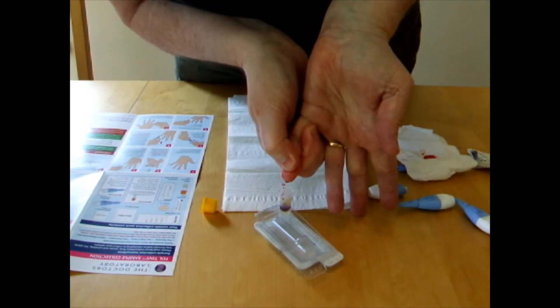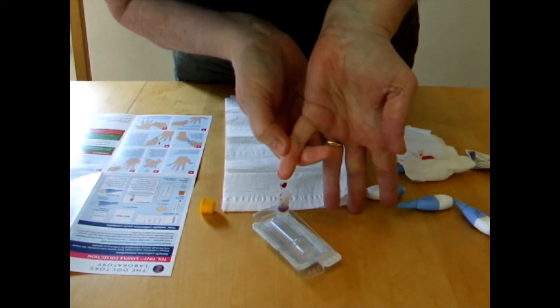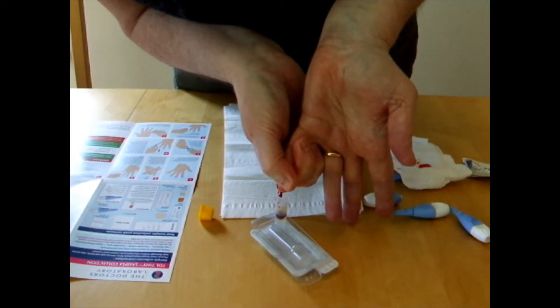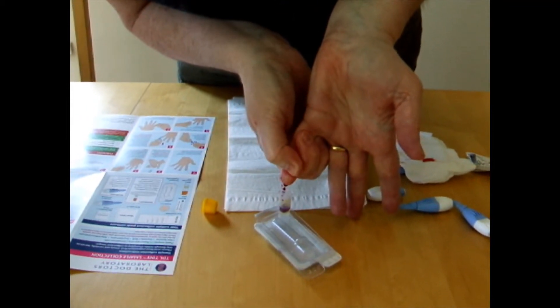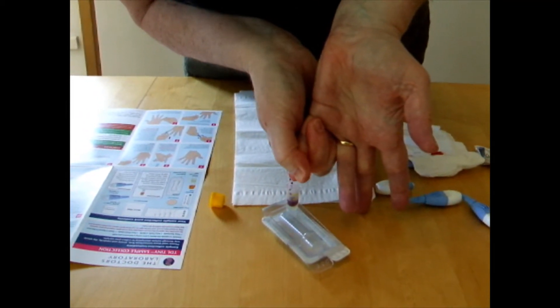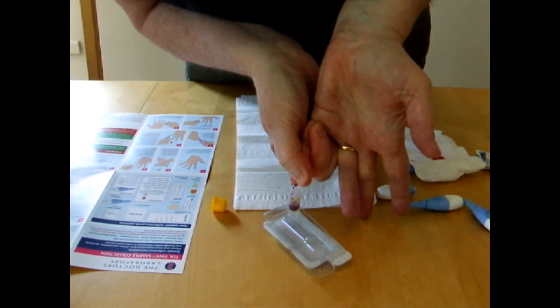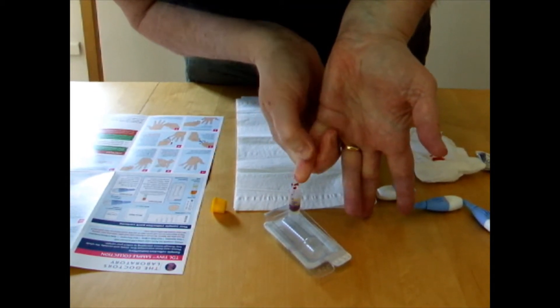And what you're trying to do is get enough blood in the tube to meet the top. There's two yellow lines you need to get it to the yellow line at the top.